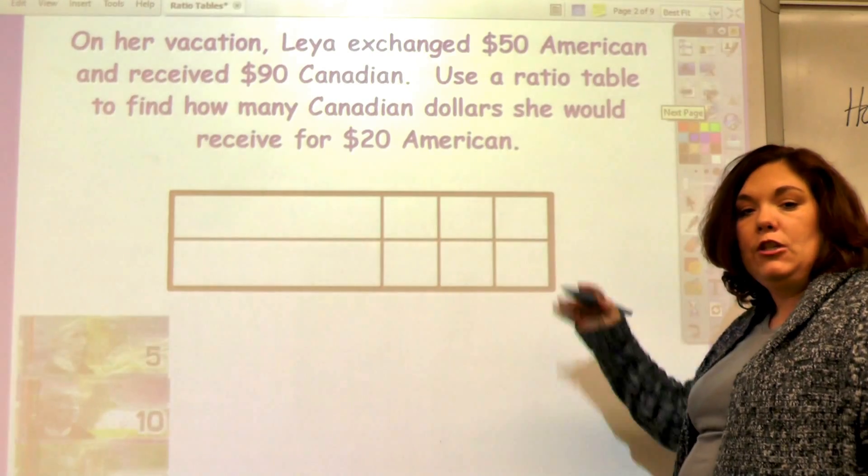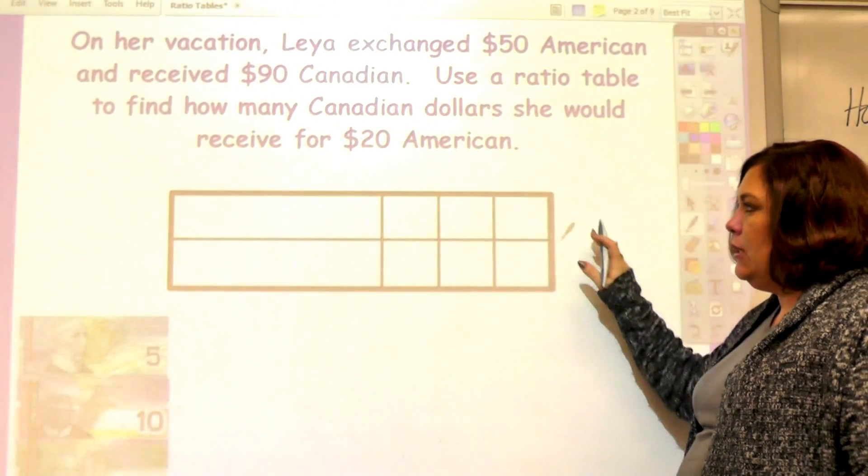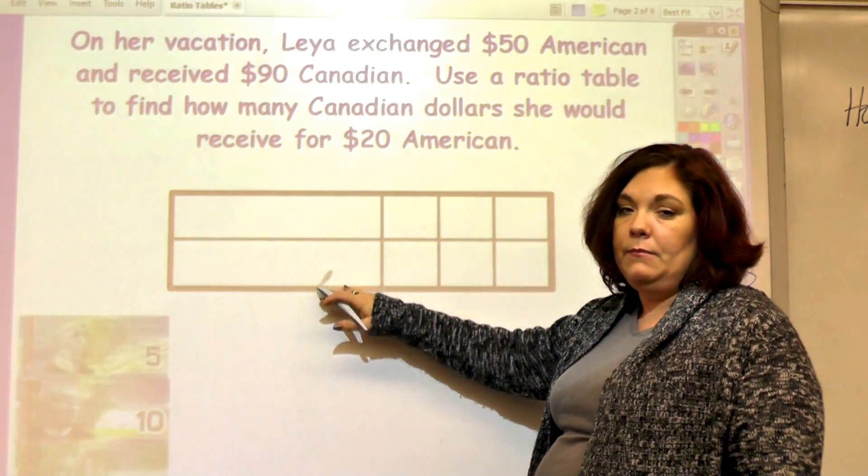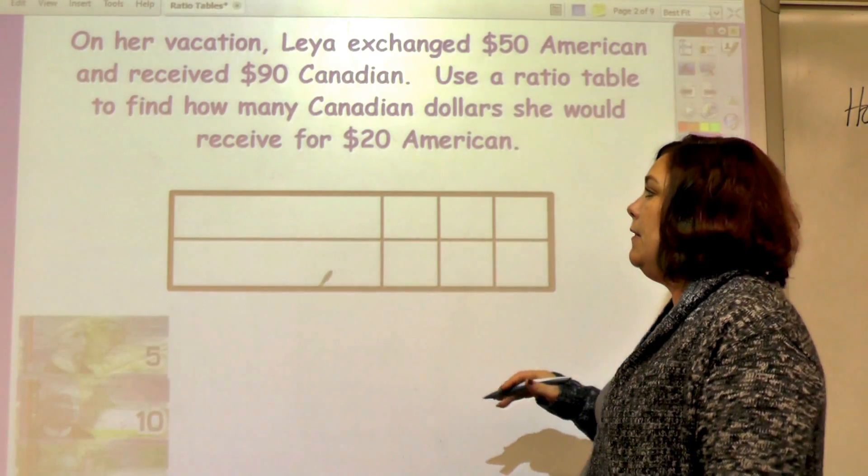Here's a ratio table. In a ratio table you make sure and label your items so that you can make sure that you're comparing the right things.